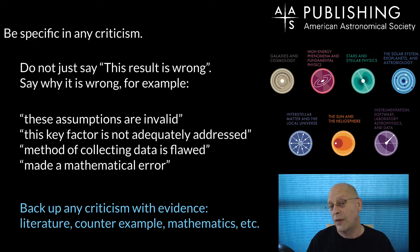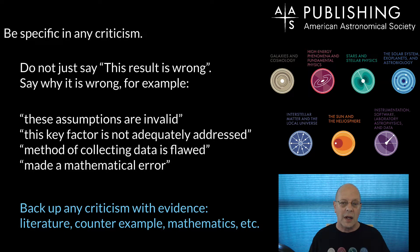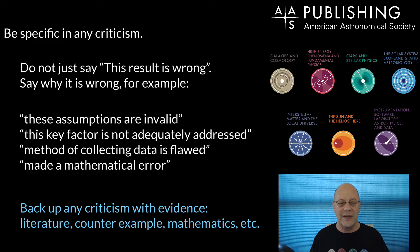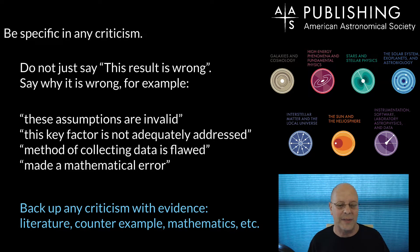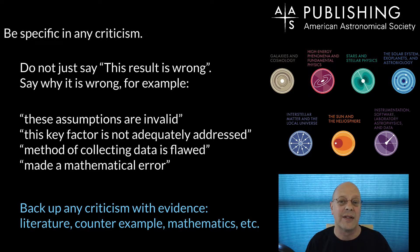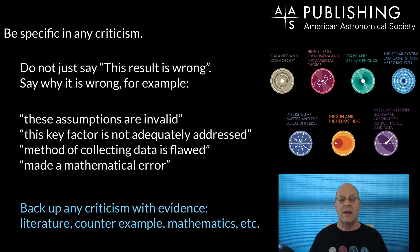After you've said what's good about a manuscript and you want to offer some critique, be specific. Don't just say 'this result is wrong' — I've gotten reports like that, and I'm sure other scientific editors have as well. You have to say why it is wrong. It could be things like: these assumptions are invalid, this key factor is not adequately addressed, the method of collecting data is flawed, or they made a mathematical error. You want to back up your criticism with evidence.